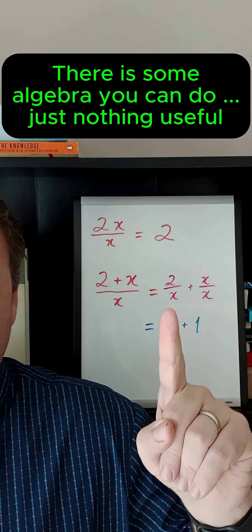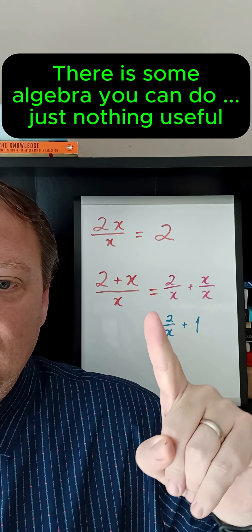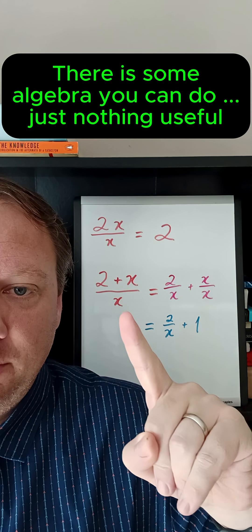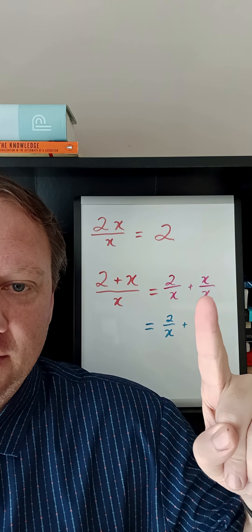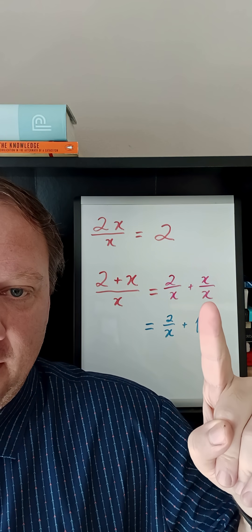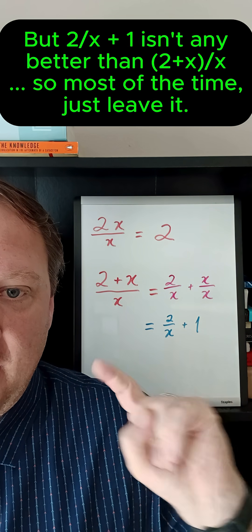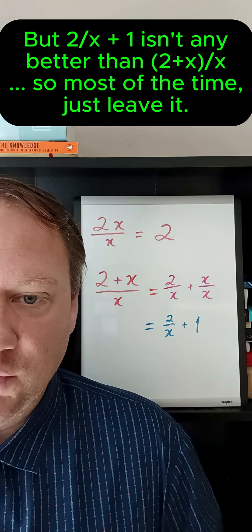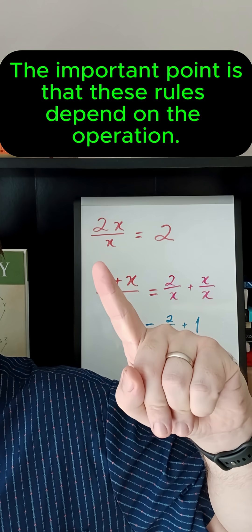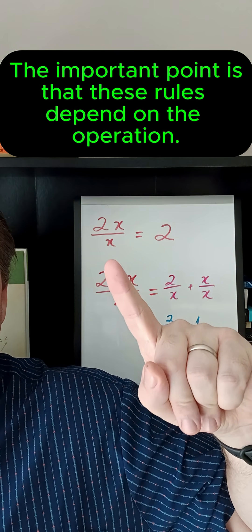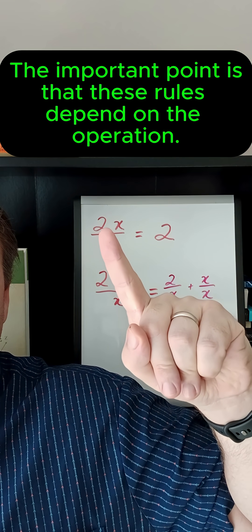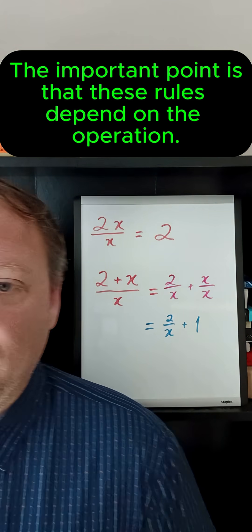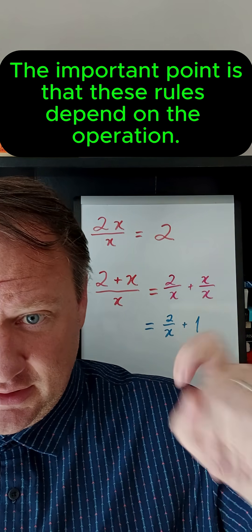Now that's not to say there are no algebraic operations possible. Certainly we could do distribution. When the operation here is plus you can distribute the division so that you get 2 over x and then plus x over x. And then further if you wanted to simplify that you could call that 1, right? x over x is the same thing as 1. But the really important point is just that cancellation like this is valid only when the operation is multiplication, not when the operation in the numerator is addition.